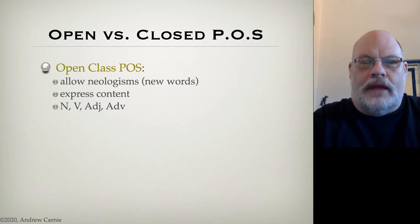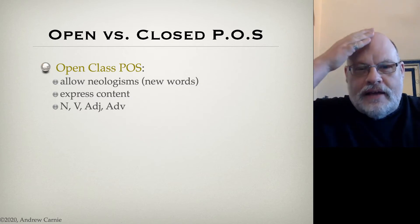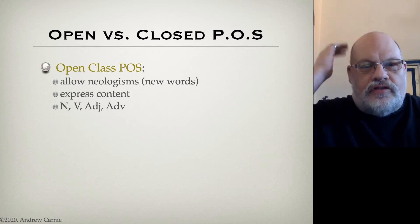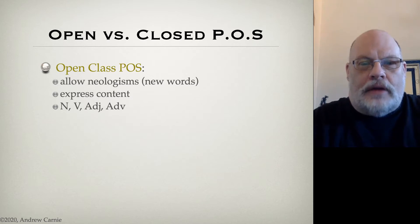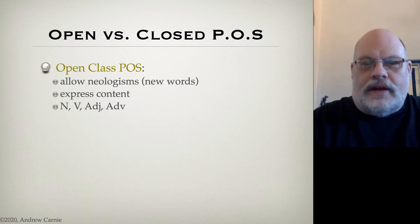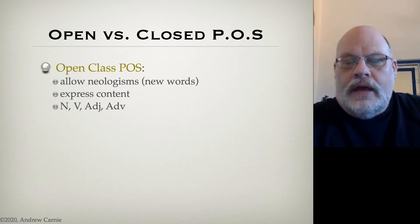For example, I can make up a word — sploit. Sploit refers to the fantastic sheen that shines off my forehead because I'm so bald. I can talk about the sploit of my forehead, or "My, that's a fantastic sploit you have." That's an example of a new word you've never heard before, and you can tell right away it's a noun.